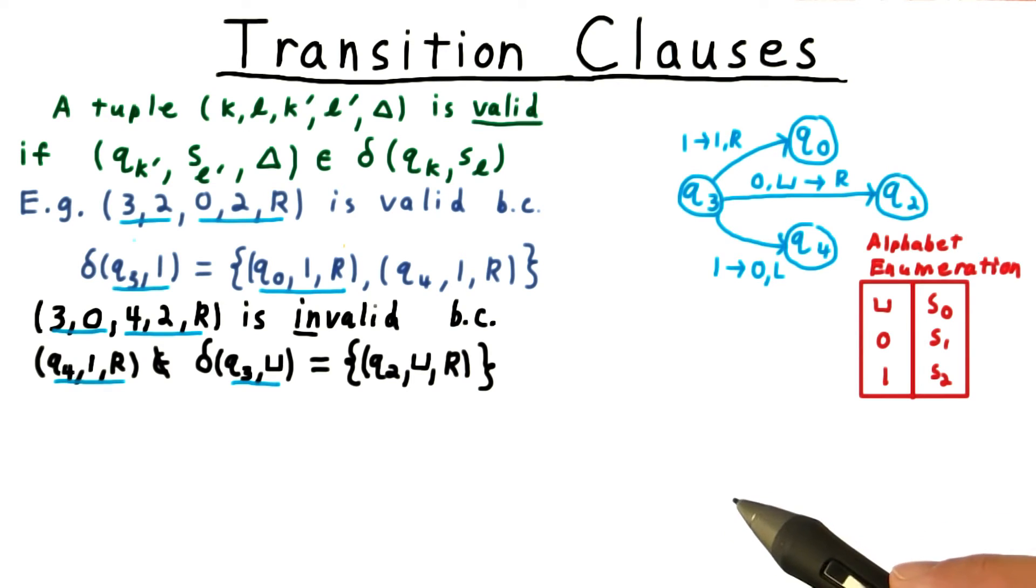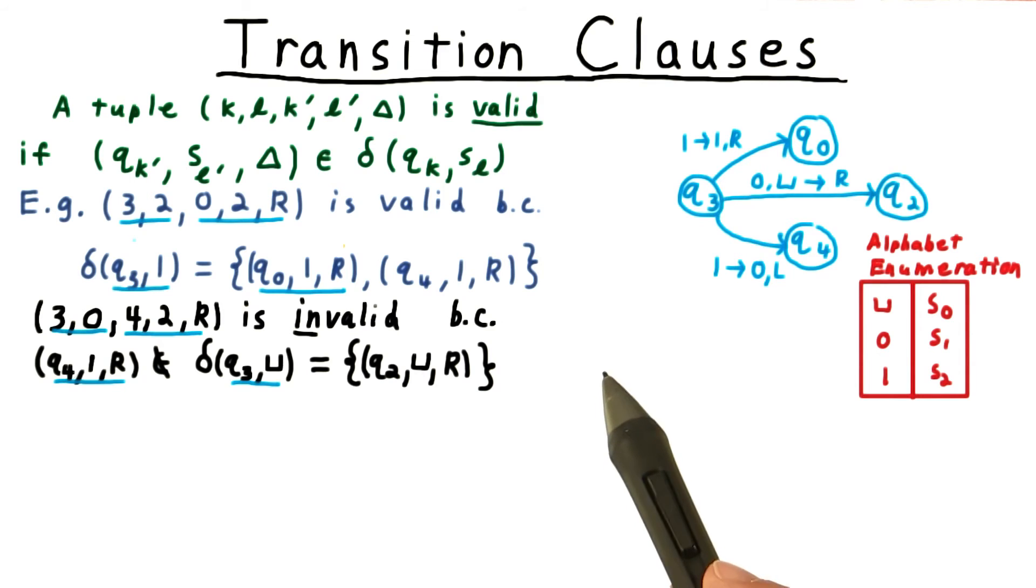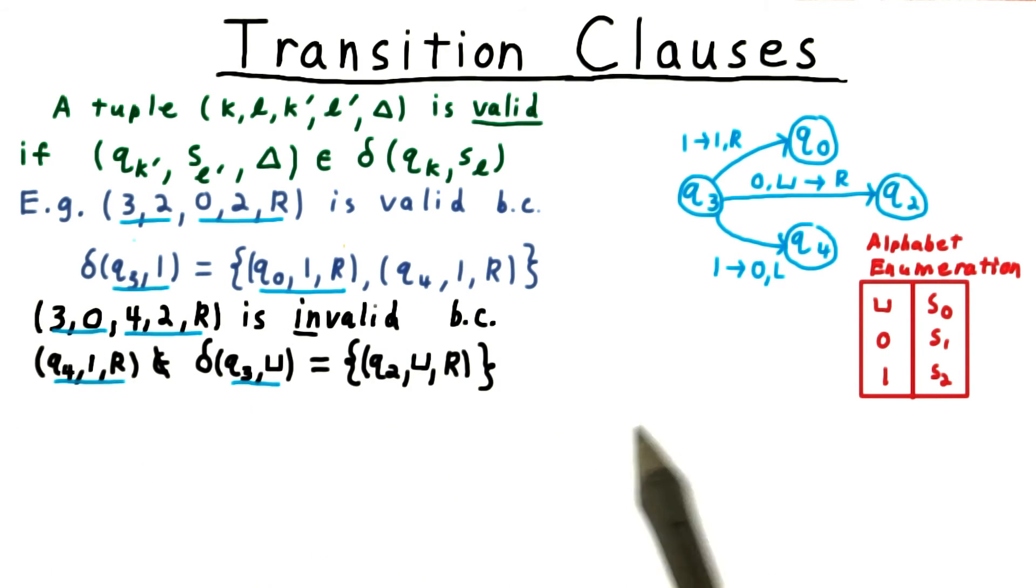Now, there are multiple ways to create the clauses needed to ensure that only valid transitions are followed. Many proofs of Cook's theorem start by writing out Boolean expressions that directly express the requirement that one of the valid transitions be followed. The difficulty with this approach is that the intuitive expression isn't in conjunctive normal form, and some Boolean algebra is needed to convert it.